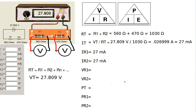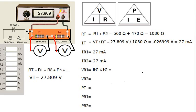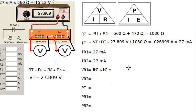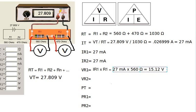To calculate the voltage, we use Ohm's Law: V equals I times R. For R1, the voltage across R1 equals the current through R1 multiplied by the resistance of R1 — that's 27 milliamperes times 560 ohms, which gives us 15.12 volts.